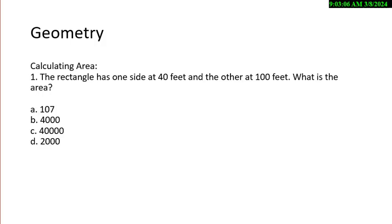So the rectangle is one side at 40 feet, the other side at 100 feet. What is the area? And the answers would be in square feet. And if you're following on YouTube, you could just pause the video here while you're doing the math. And the answer is 4,000 square feet. That means you're just taking a length of one side. 40 times 100 is 4,000 square feet.